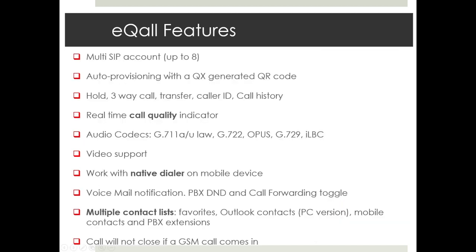Some of the features: you can have multiple SIP accounts — up to eight accounts. This is useful for users who have two accounts from two different offices or locations, with two different extensions. We have auto provisioning with a QX-generated QR code. Of course, all the basic functions like hold, three-way call, transfer, caller ID, call history, etc.